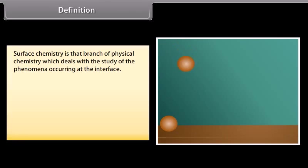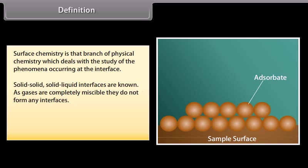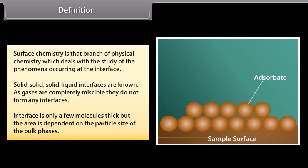Definition: Surface chemistry is that branch of physical chemistry which deals with the study of the phenomena occurring at the interface — that is, the boundary separating two bulk phases. Solid-solid and solid-liquid interfaces are known as such. Since gases are completely miscible, they do not form any interfaces. The interface is only a few molecules thick, but the area is dependent on the particle size of the bulk phases.